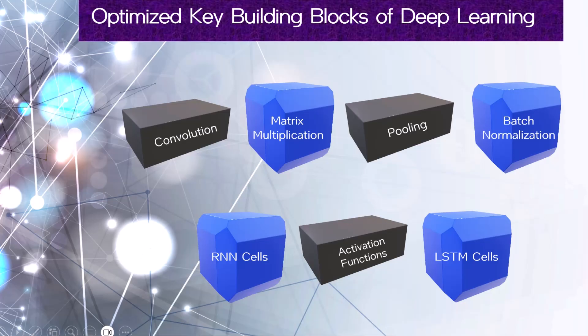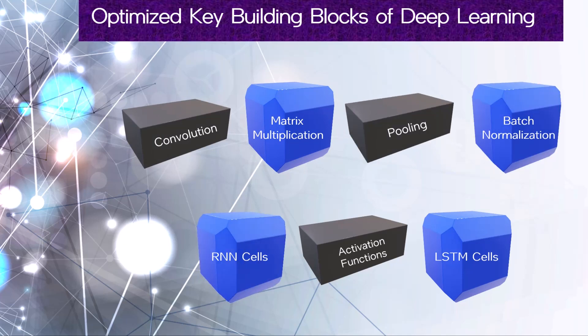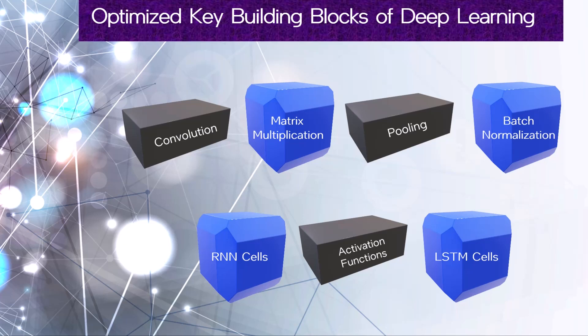The library optimizes several fundamental building blocks of a deep neural network, such as convolution, matrix multiplication, pooling, batch normalization, recurrent neural network or RNN cells, activation functions, and long short-term memory or LSTM cells.